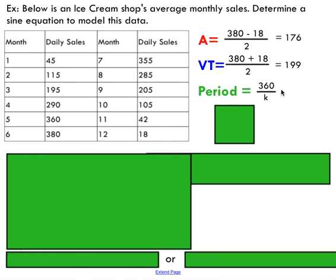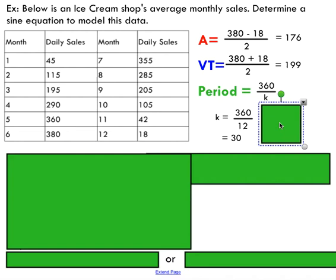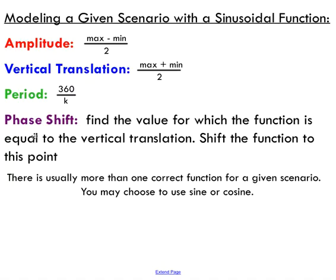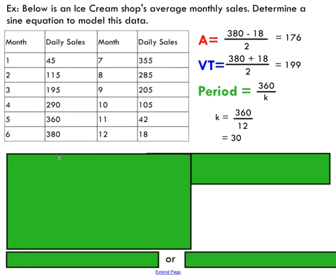Our period is going to be 360 over K. We know that our period is 12 months - it's going to take 12 months to go through one full cycle of sales. So we can solve for our K value by dividing by our period and getting 30. The last one we need is a phase shift. To find the value for which the function equals the vertical translation, you're then going to shift the function to that point.